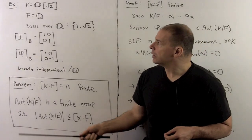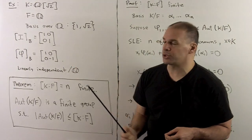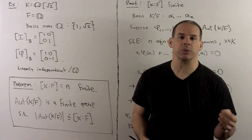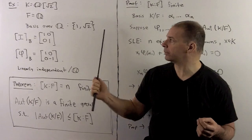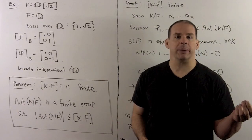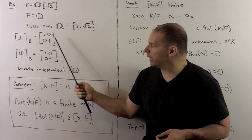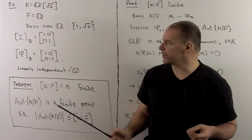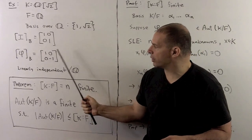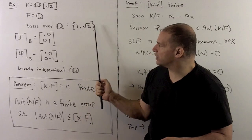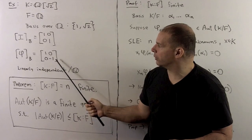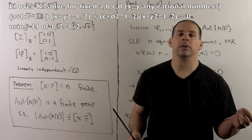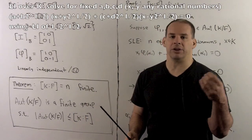For a concrete example, let K = Q(√2) and F = Q. A basis of K over Q is {1, √2}. With respect to this basis, the identity automorphism is the 2×2 identity matrix, and the non-trivial automorphism — sending √2 to −√2 — has matrix [[1, 0], [0, −1]]. We can see immediately that these matrices are linearly independent over Q, and I'll leave it to you to work out linear independence over K.